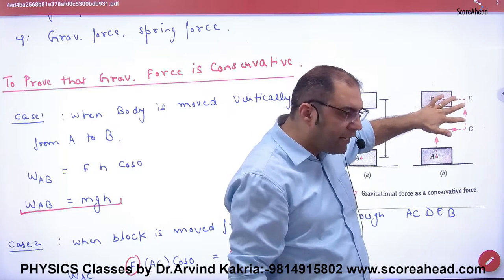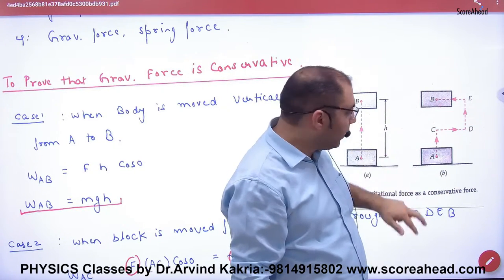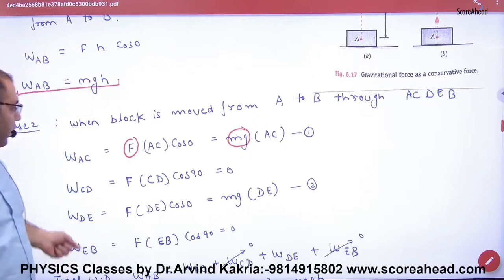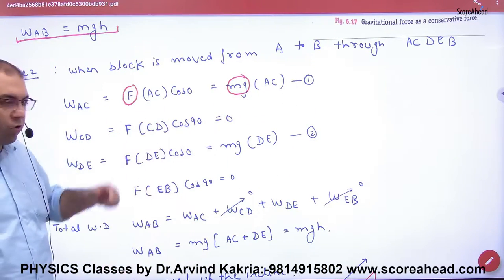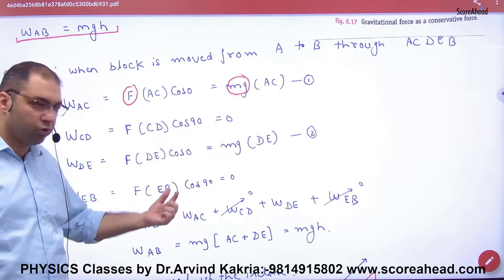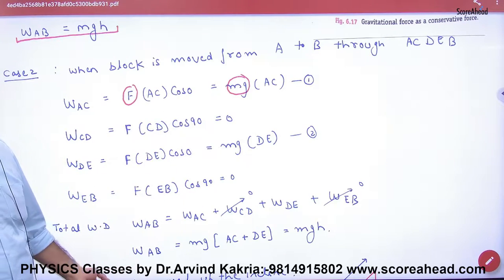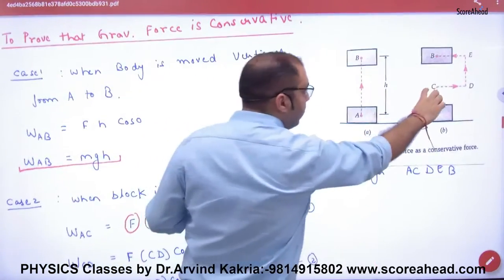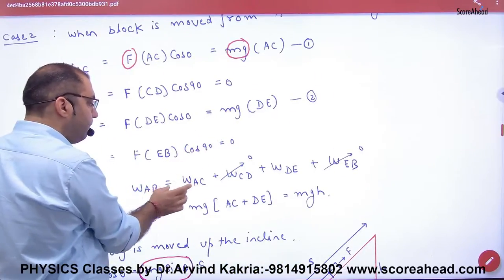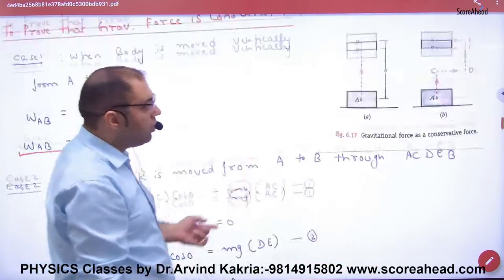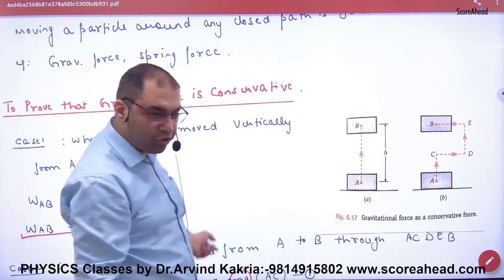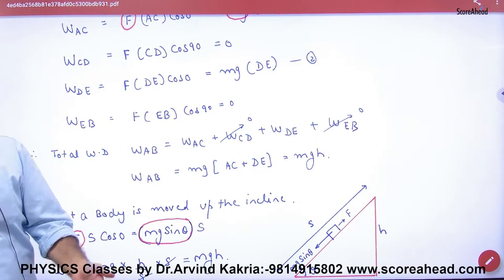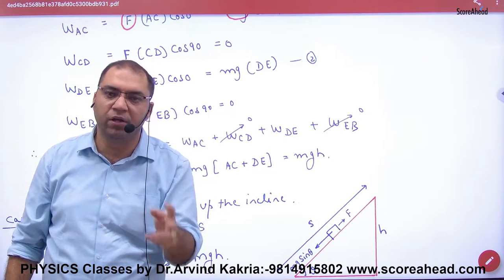So the total work done adds up: work done from A to C is mg into AC, work done from C to D is 0, work done from D to E is mg into ED, and the remaining segments are 0. The net work done is mg into (AC + DE). Since AC plus DE equals h, the total work done is mgh. So the second case also gives mgh.